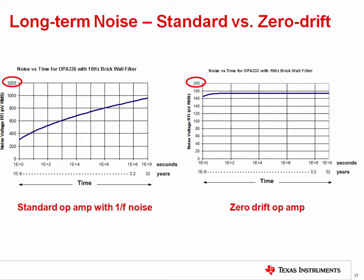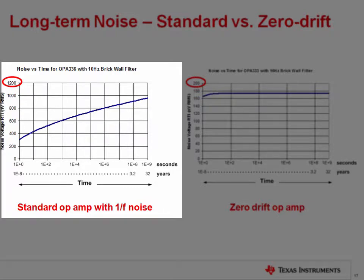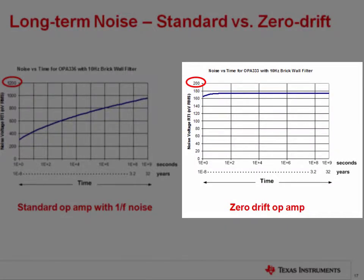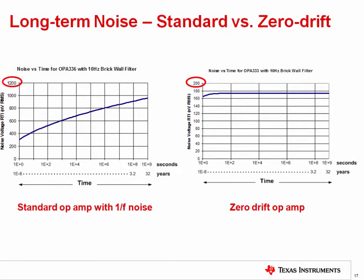Comparing the long-term noise of the OPA336 (left) with the zero drift OPA333 (right): the OPA336 has 1/f noise and its total noise increases with time, while the OPA333 does not and remains relatively constant. Note that the y-axis scales are very different — the OPA336 plot has a maximum of 1,200 nV RMS, while the OPA333 plot has a maximum of only 200 nV RMS.